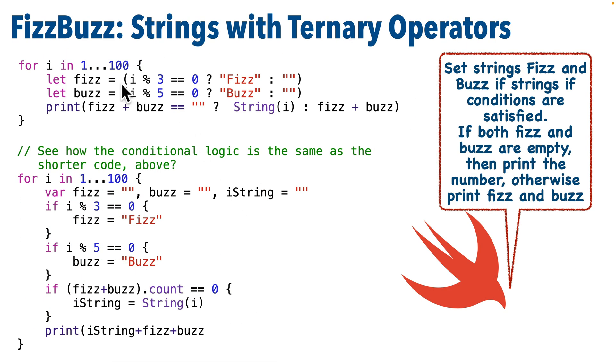Now back in our code, we set this first string, which is named Fizz, to either the string Fizz with a capital F if we divide evenly by 3. Otherwise we set it to the empty string. And we set the string named Buzz to either the string Buzz with a capital B if we divide evenly by 5. Otherwise we set it to the empty string. And down here if Fizz plus Buzz equals the empty string, then we should print i as a string. Otherwise we should print Fizz and Buzz, which is either Fizz, Buzz, or both Fizz and Buzz.